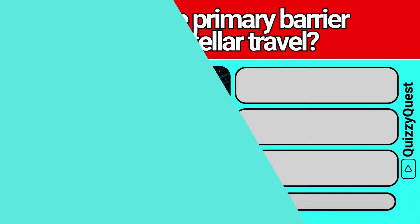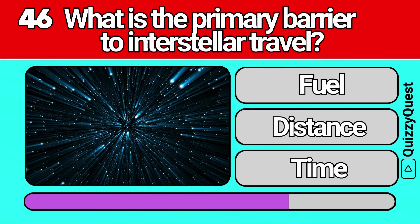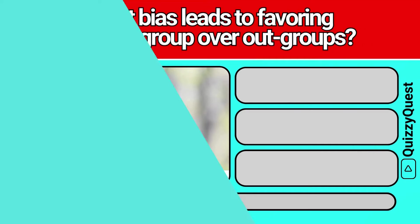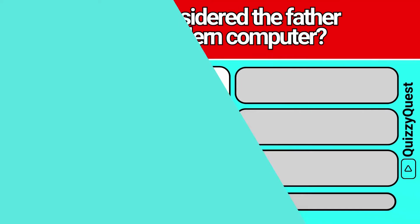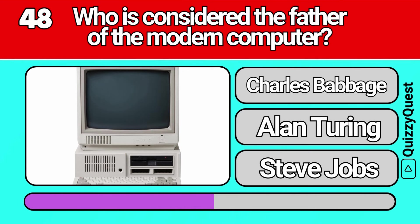What is the primary barrier to interstellar travel? What bias leads to favoring one's in-group over out-groups? Who is considered the father of the modern computer? What country has the highest population density?